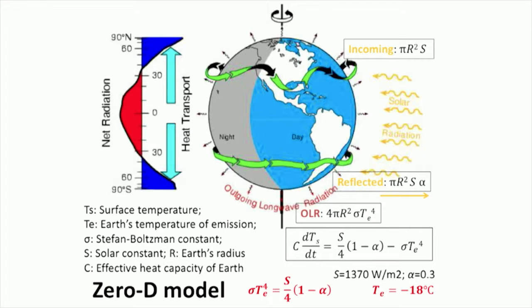The earth will release energy in the infrared wavelength from all of the earth's surface, 4πR²σTe⁴. Te is the emission temperature. Therefore, there is an equilibrium, a balance between the energy received and the energy emitted by the earth.